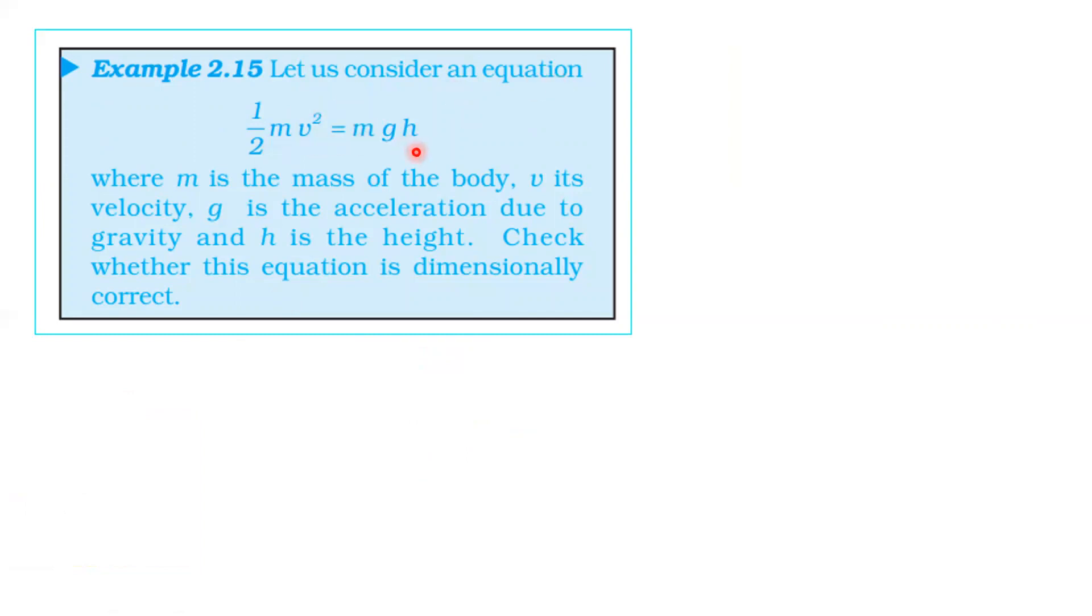Next question. Let us consider an equation: half m v squared equals mgh. Where m is the mass of the body, v is its velocity, g is the acceleration due to gravity, and h is the height. Check whether this equation is dimensionally correct or not. The dimension of kinetic energy is MLT inverse squared. The dimension of potential energy is also MLT inverse squared. Right-hand side and left-hand side have the same dimension, so it is dimensionally correct.